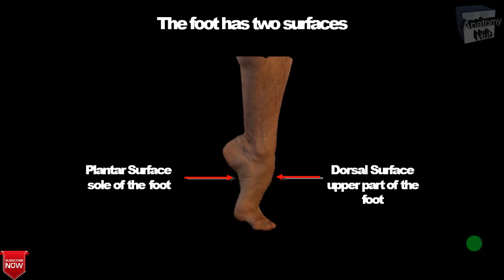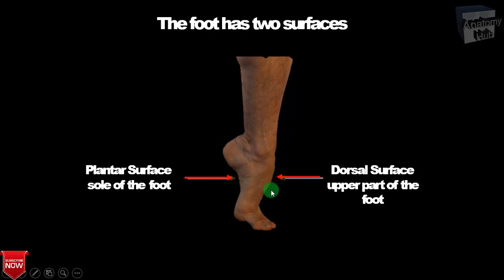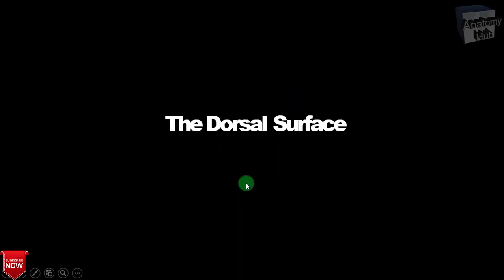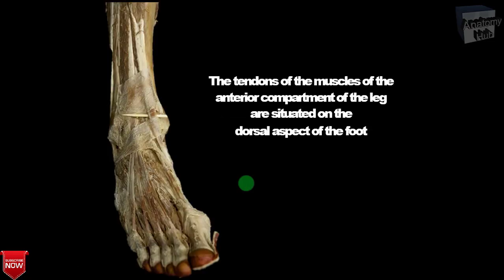Here you can see the dorsal surface of the foot and the plantar surface, also called the sole of the foot. The dorsal surface is the upper part of the foot, whereas the plantar surface is the sole or the inferior part of the foot. We will first study about the dorsal surface.